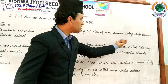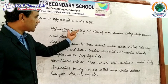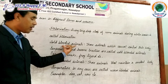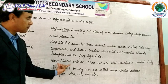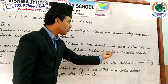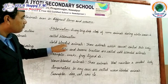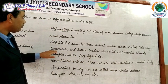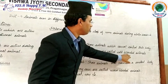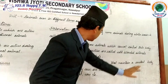Hibernation is connected to another definition — cold-blooded animals. Animals are categorized into two groups: cold-blooded animals and warm-blooded animals. Cold-blooded animals are those animals which cannot control their body temperature and become inactive. Examples: snake, frog, and lizard.